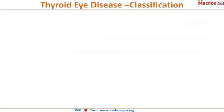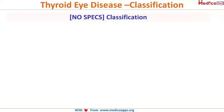There is a very interesting mnemonic to remember the signs and symptoms of Thyroid Eye Disease, because there are too many to remember. As ophthalmologists, your mnemonic will be NO SPECKS, which will give you all the signs and symptoms. N stands for no signs and no symptoms.